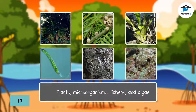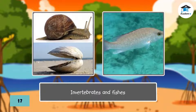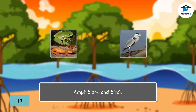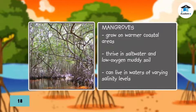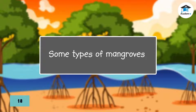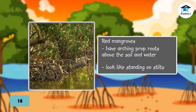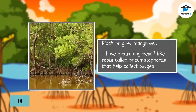Mangroves support various plants, microorganisms, lichens, algae, invertebrates, fishes, reptiles, amphibians, birds, and even mammals. Mangroves are woody plants that grow on warmer coastal areas and thrive in saltwater and low oxygen muddy soil. They can live in waters of varying salinity levels. Popular types include the red and black or grey mangroves. Red mangroves are identified as having arching crop roots above the soil and water, making them look like they are standing on stilts. Black or grey mangroves have protruding pencil-like roots called pneumatophores that help collect oxygen.